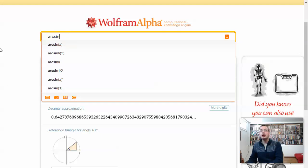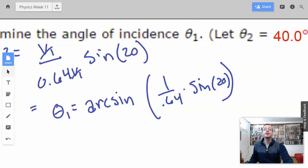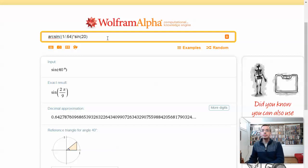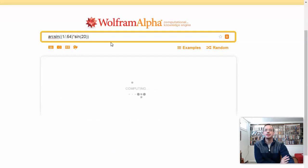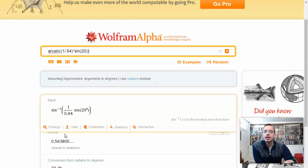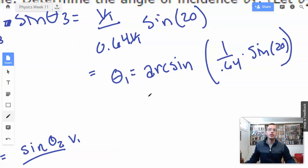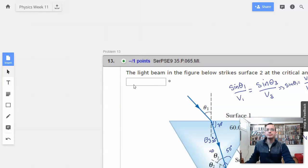Arcsine of quantity 1 divided by 0.64 times sine of 20. I'll throw in another parenthesis just for good measure. Alright, so 1 over 0.64, sine of 20, arcsine. 32.3 equals 32.3 degrees. Bam! Here we go. That wasn't too bad.